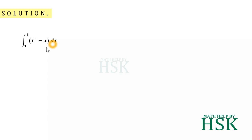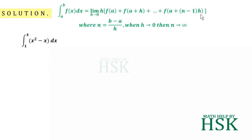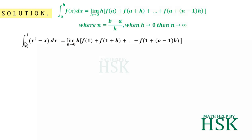First of all, we are going to take the integral and apply the limit of sum formula. Because the lower limit is equal to 1, in this formula I am going to write 1 instead of a. So I get the integral of x squared minus x dx from 1 to 4 as equal to the limit as h tends to 0 of h into f(1) plus f(1+h) plus so on up to f(1 + (n-1)h).